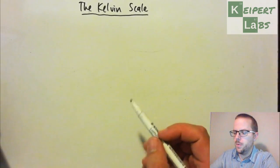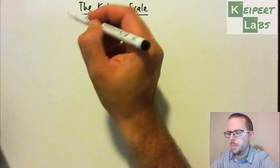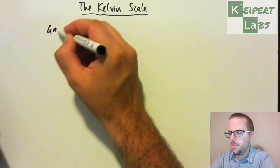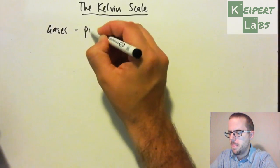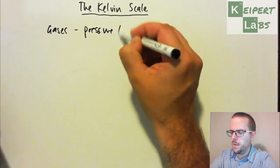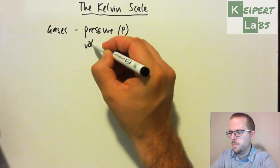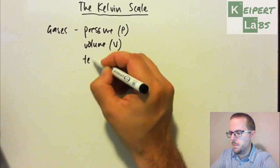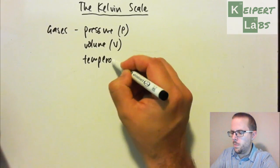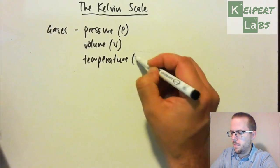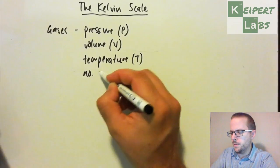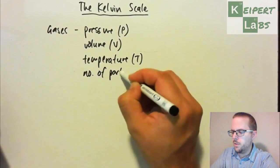In the recent activity we've been looking at comparing properties of gases. We've been thinking about pressure, which we give the symbol of P, volume, which is V, temperature, which is T, and number of particles, which we call N.